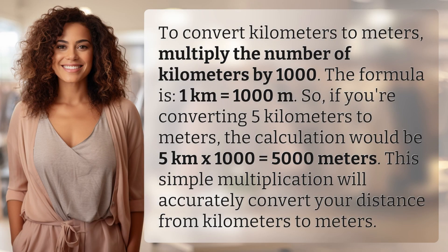To convert kilometers to meters, multiply the number of kilometers by 1,000. The formula is 1 kilometer equals 1,000 meters. So, if you're converting 5 kilometers to meters, the calculation would be 5 kilometers times 1,000 equals 5,000 meters. This simple multiplication will accurately convert your distance from kilometers to meters.